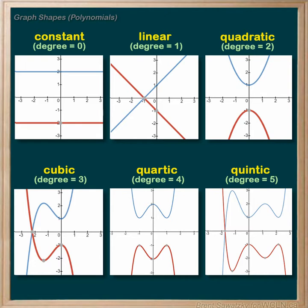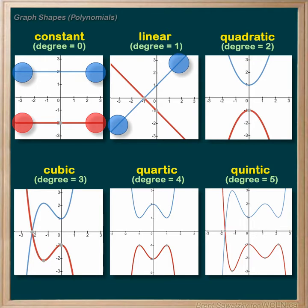Let's stop and observe some of the trends in these graphs. First, let's recognize where these graphs begin and end. For a degree of zero, the constant, the positive starts in the top left and ends in the top right. The negative starts in the bottom left and ends in the bottom right. For a degree of one, the positive starts in the bottom left and ends in the top right.